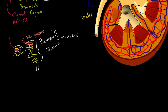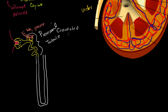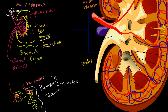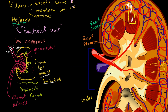Then we enter the loop of Henle — in my mind, the most interesting part of the nephron. The loop of Henle dips down and then comes back up. Most of the length of the nephron is the loop of Henle. It crosses the border between the cortex and the renal medulla, and it does that for a very good reason.